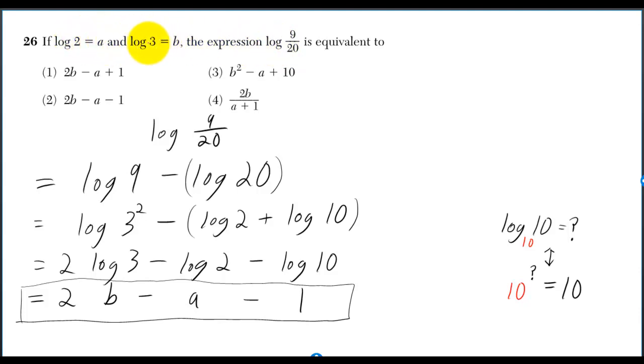If log 2 is equal to A and log 3 is equal to B, the expression log of 9 over 20 is equivalent to log 9 minus log 20.